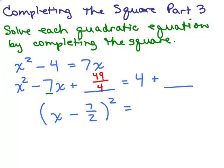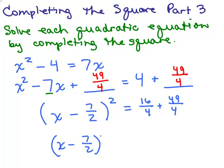If I add 49 fourths to one side, you must add the same thing to the other side of the equation. Now I have to simplify the right-hand side. You could do this on scratch paper, get a common denominator. The common denominator is 4, so this 4 is the same as 16 fourths plus 49 fourths, so I have x minus 7 halves squared. 16 plus 49 is 65, so that's equal to 65 fourths.